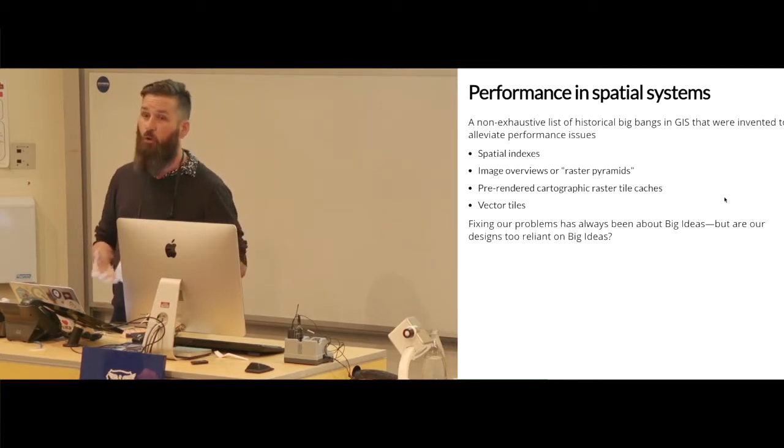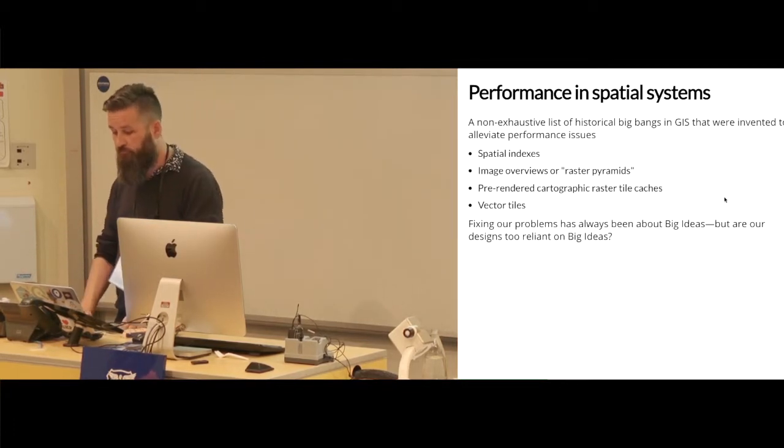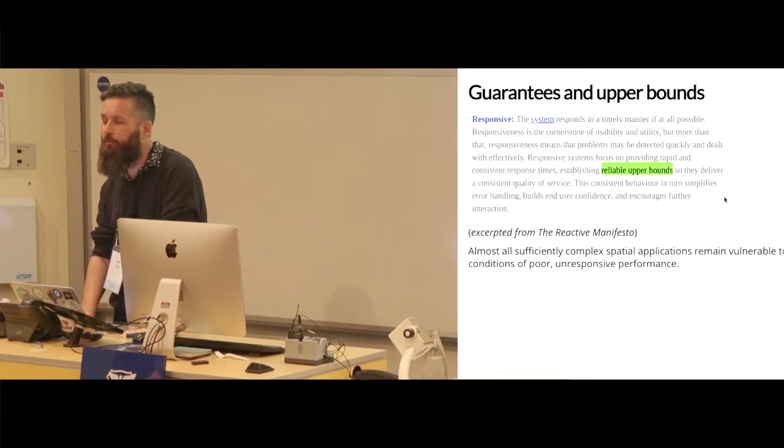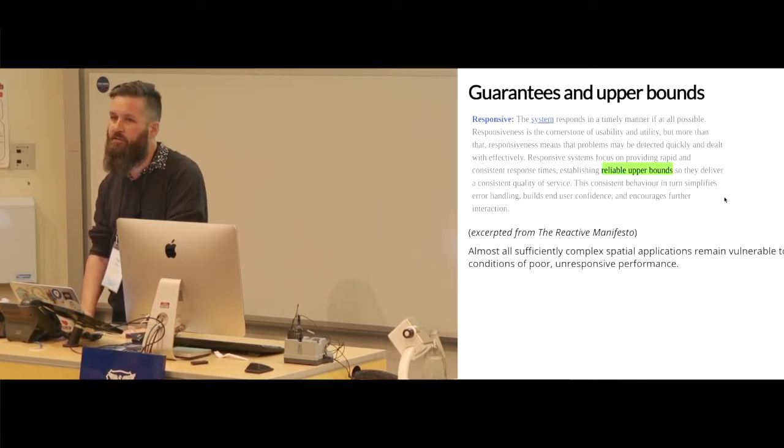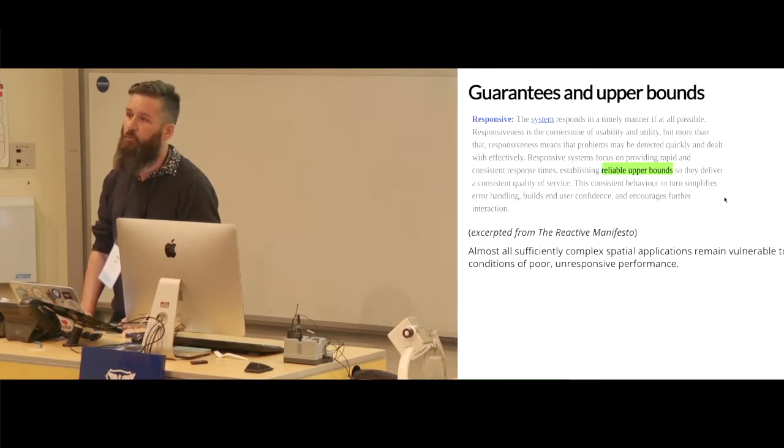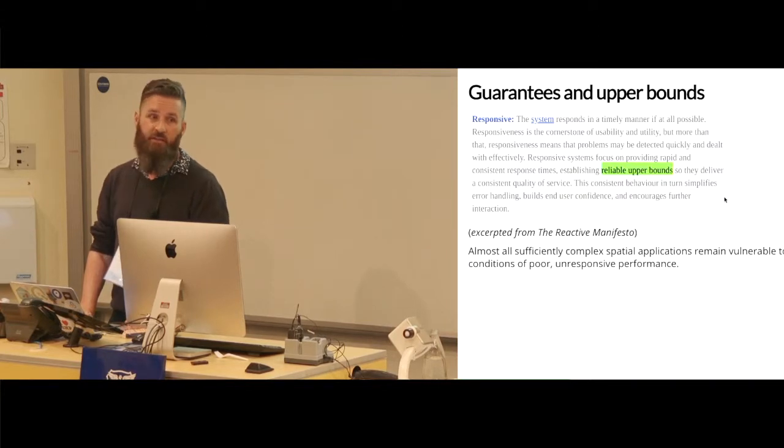A couple of years ago there was an interesting document published called the reactive manifesto by some people who are mainly interested in distributed systems. The reactive manifesto has a number of tenets, some of which are pretty controversial, but one of the things that it talks about is upper bounds on performance and the importance of being able to establish worst case performance criterion for your system.